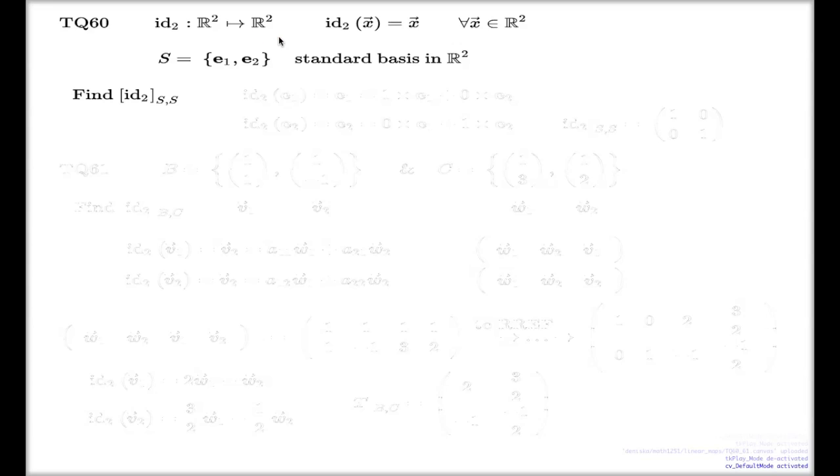Nothing can be easier than this task; it doesn't involve any computations at all. All I have to do is follow the steps of finding the matrix of a linear map. First, I apply my identity map to the first element of the basis, which is simply the first element of the basis, and I make the observation that this gives me the representation of the first element of the basis as a linear combination of elements of the basis.